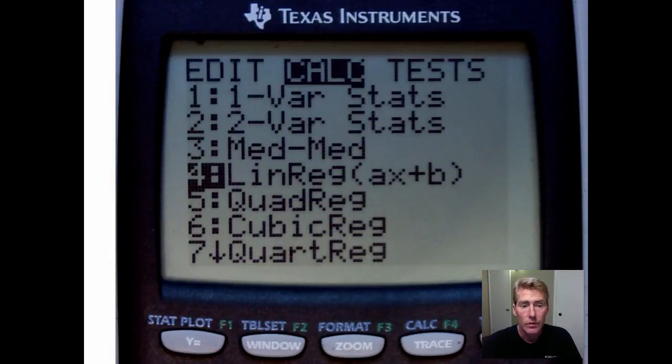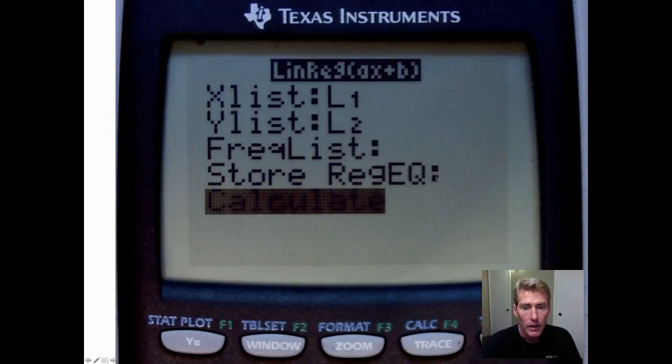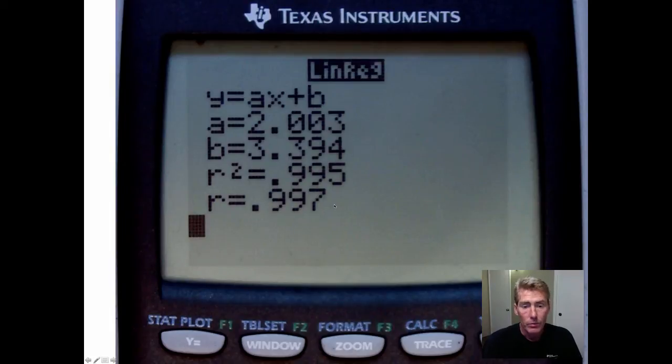And then if you go to stat plot over here on the left, so second stat plot, turn it on. This is the scatter plot. Make sure it says list one and list two. You have a choice of which mark you like to use. I like the little plus to keep things positive. And then go to zoom right here, zoom number nine. And this is what it would look like. So you can see that looks like a strong positive linear correlation. And when you're asked to draw it, it should look something like this.